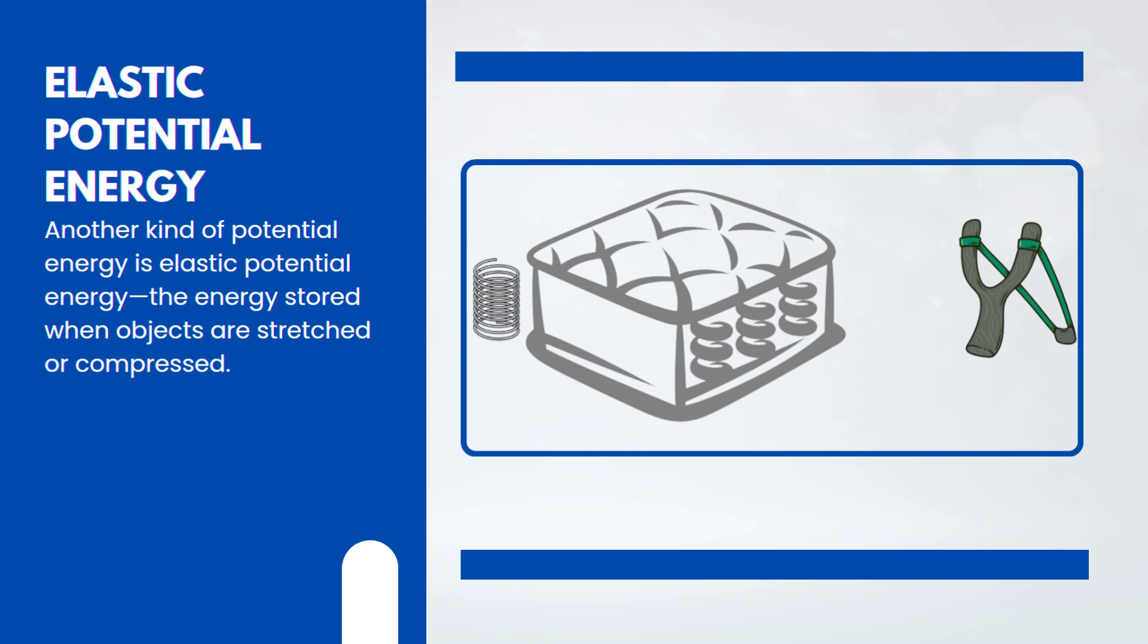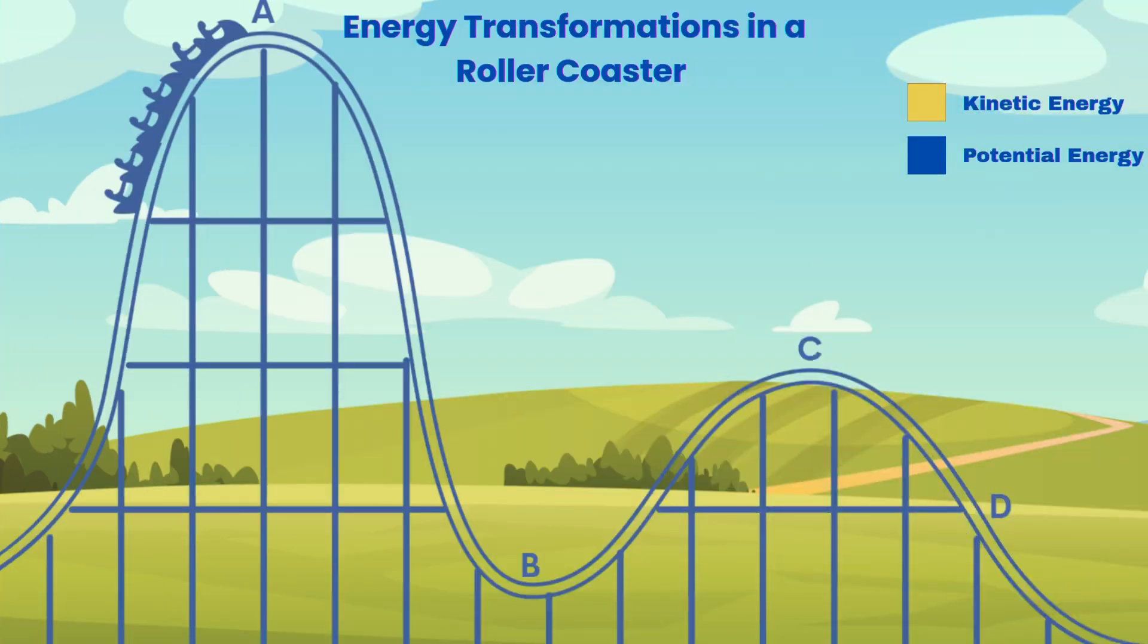So now that we've seen the different kinds of energy, let's compare how potential and kinetic energy work together. Let's compare the roller coaster cart's potential and kinetic energy at each point on the track. At point A, the cart is at its highest position.